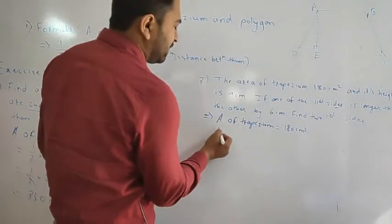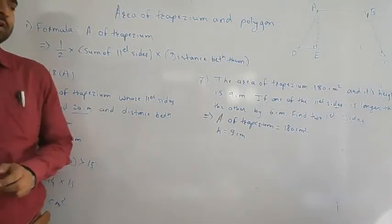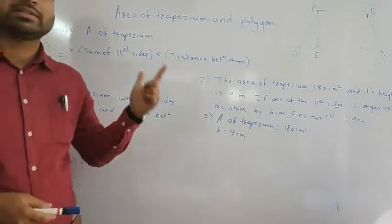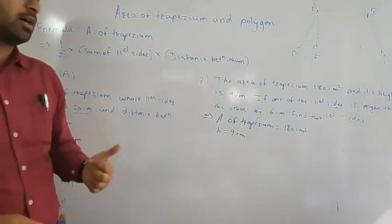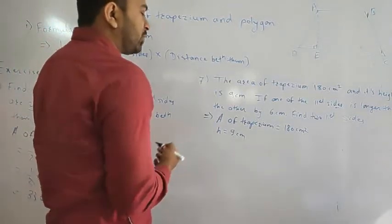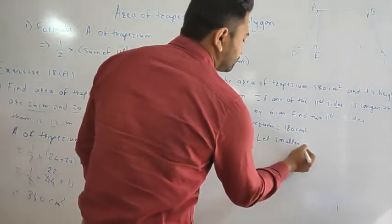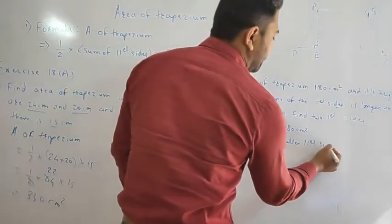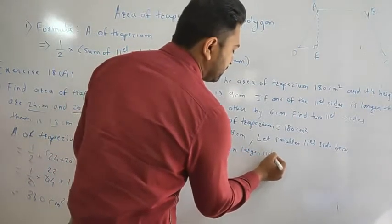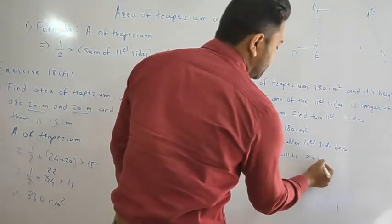The height of the trapezium is given as 9 centimeters. If one of the parallel sides is longer than the other by 6 centimeters — meaning the parallel sides are not given directly, they are given in the form of an equation. So I will consider the smaller side to be x, and the larger side to be x plus 6.